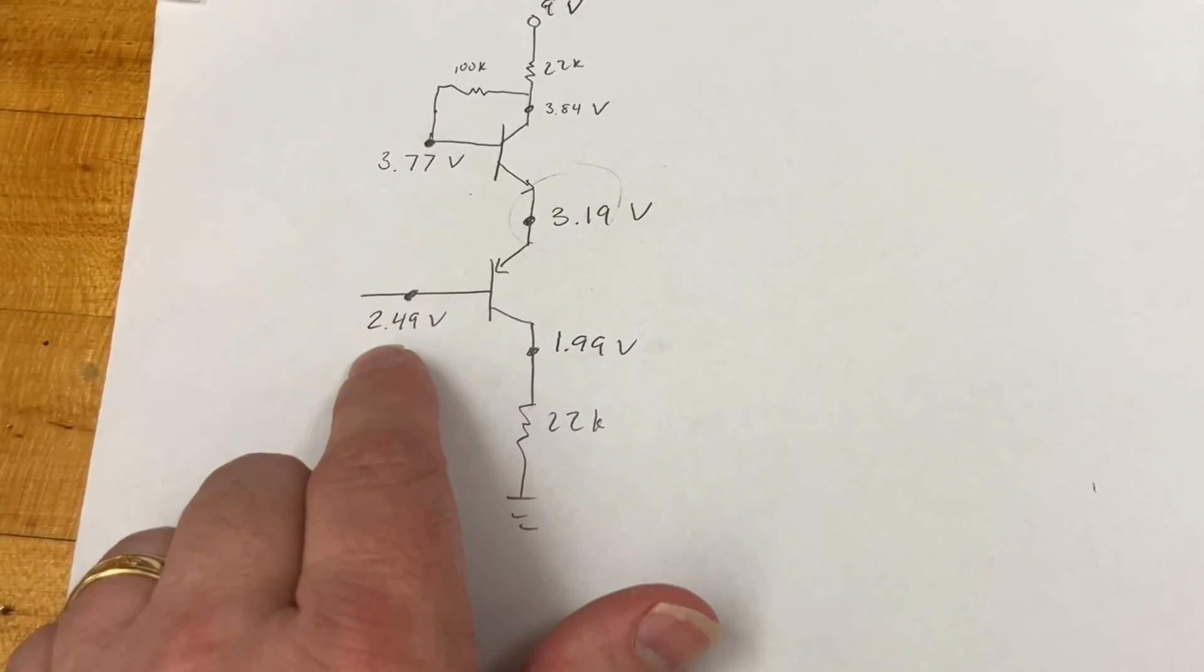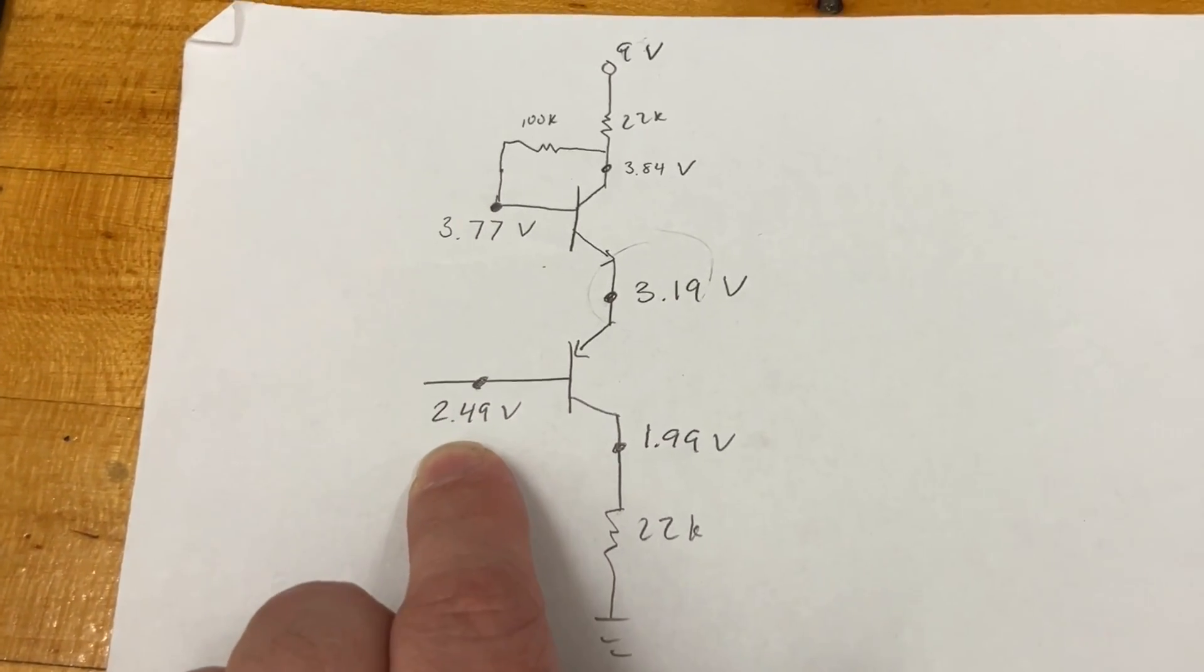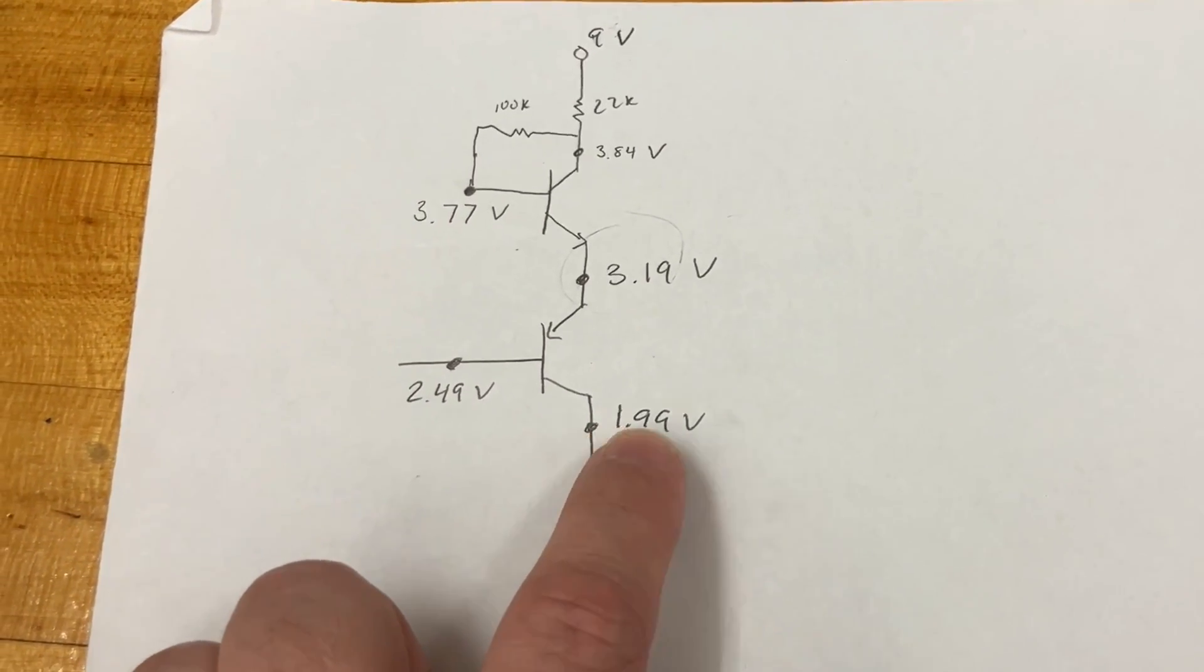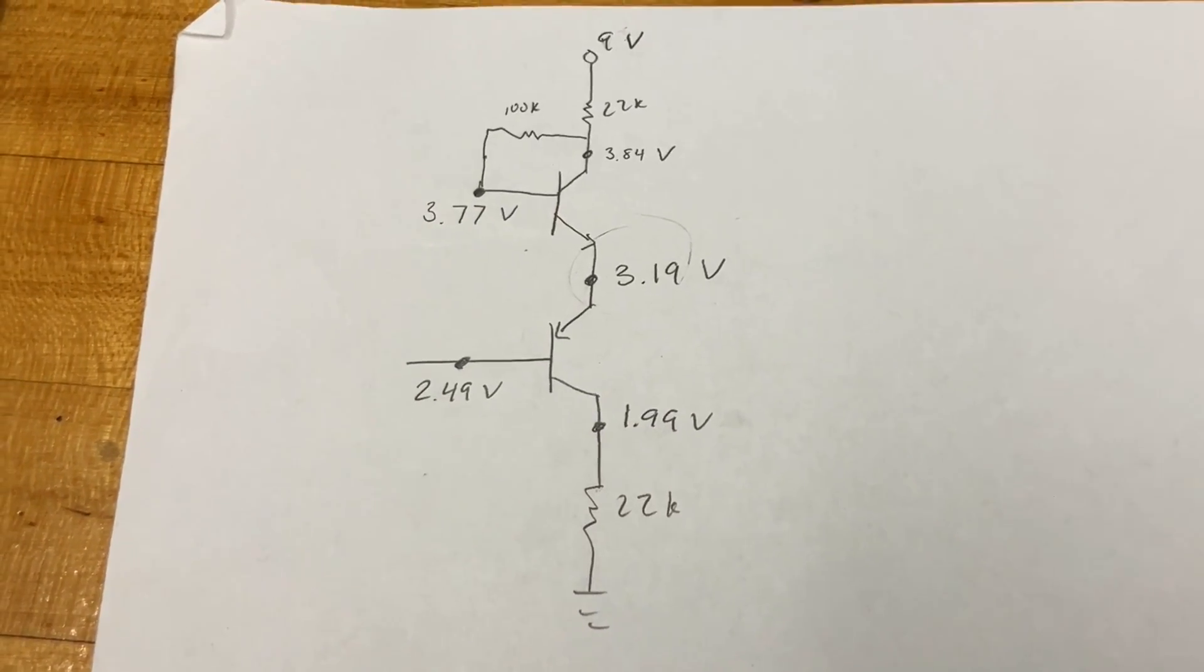And for the PNP, we read 2.49 volts at the base and 1.99 volt at the collector.